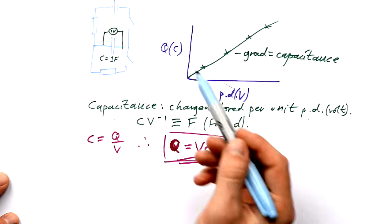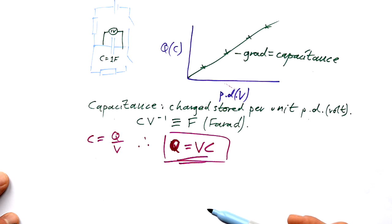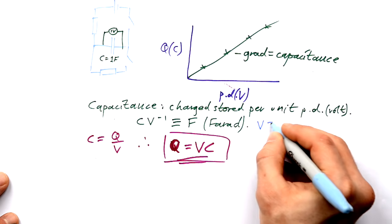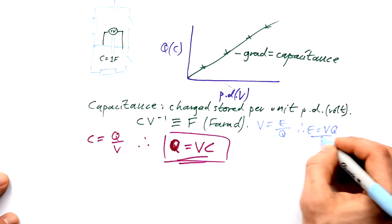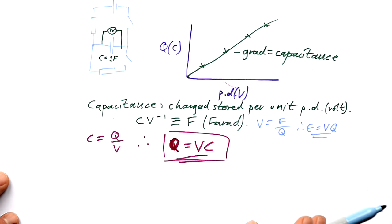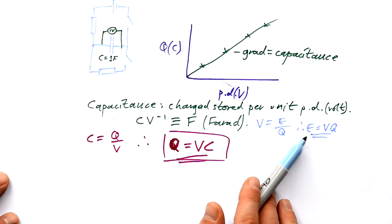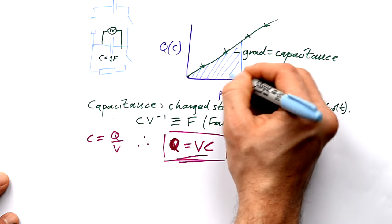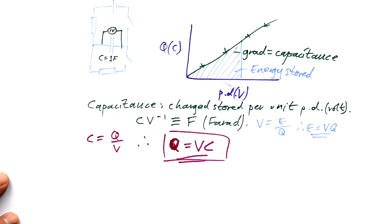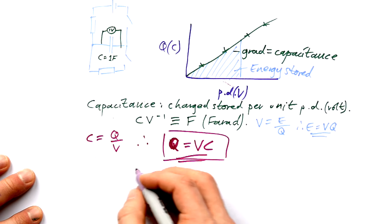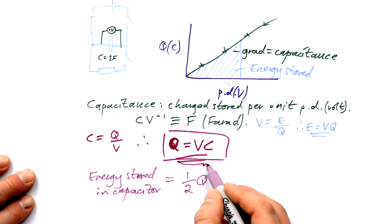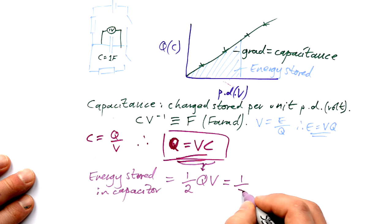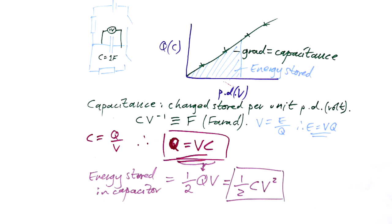How do we find the energy stored? We know that voltage is energy per coulomb, so energy equals voltage times charge. When two quantities are multiplied together in an equation, it's the area under the graph that gives us that value. Because the graph is a triangle, the energy stored is not VQ but half QV. Substituting Q = CV gives us E = ½CV². That's another way to calculate the energy stored just from voltage and capacitance.